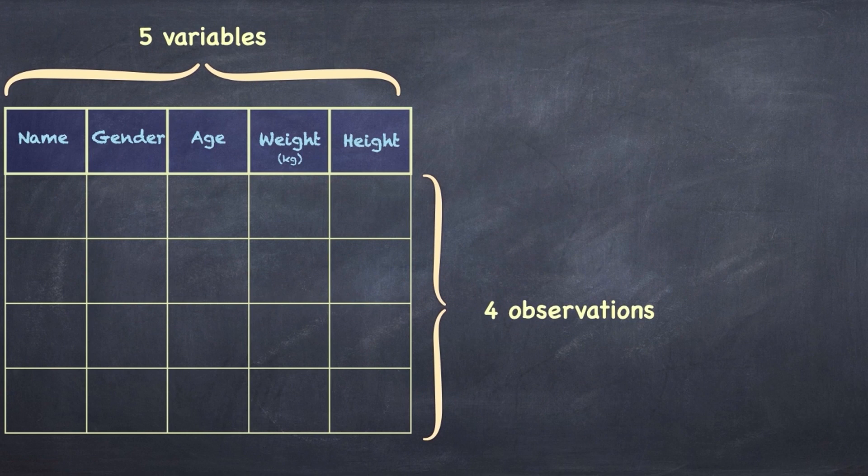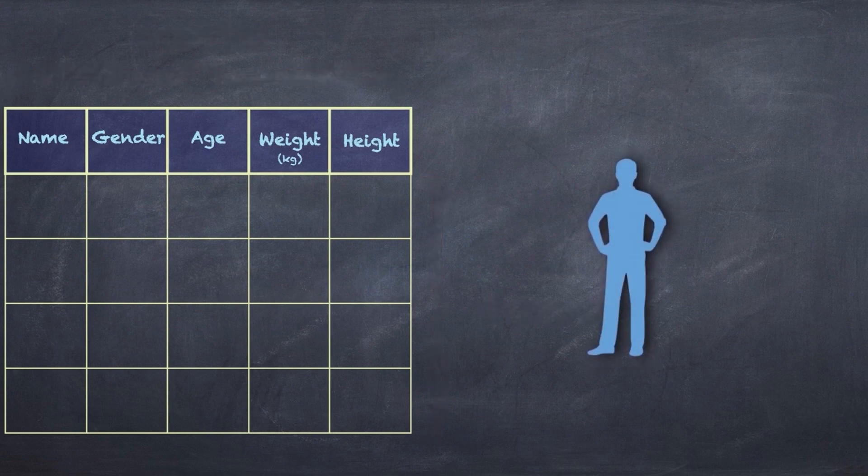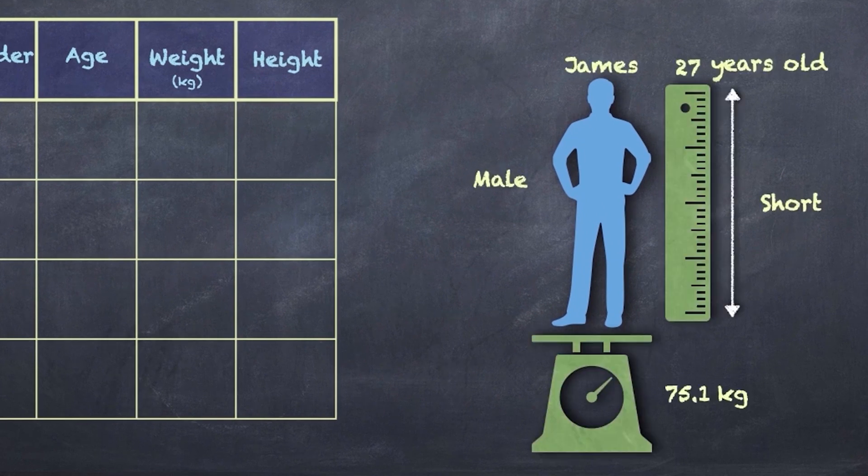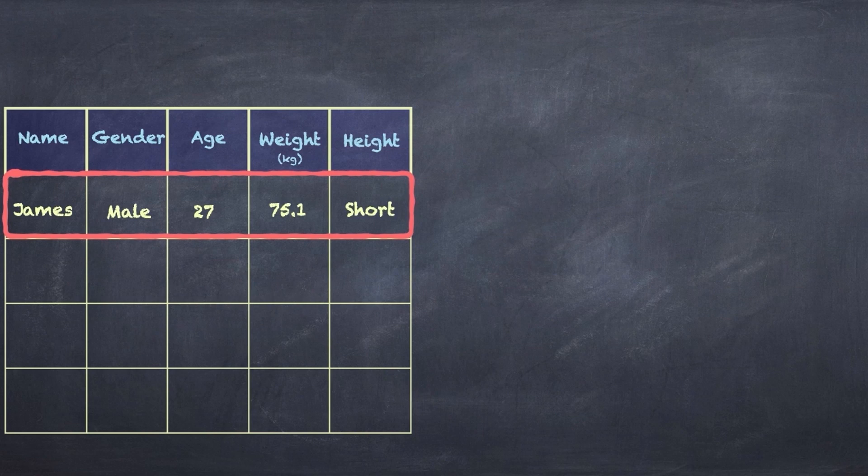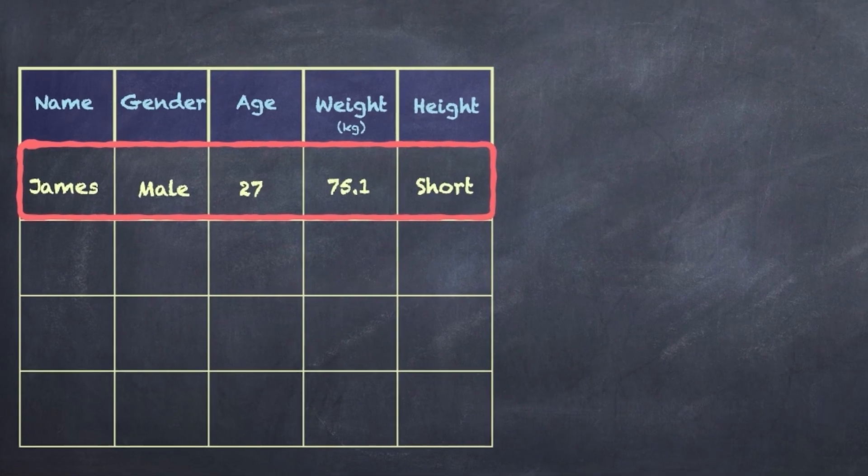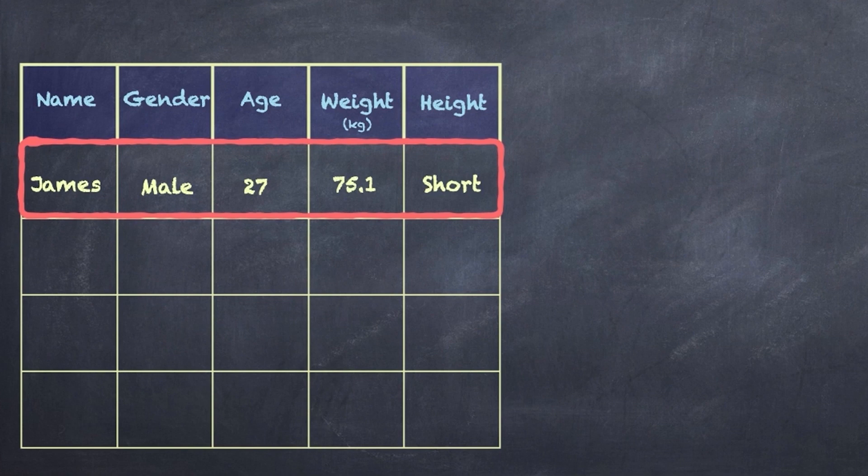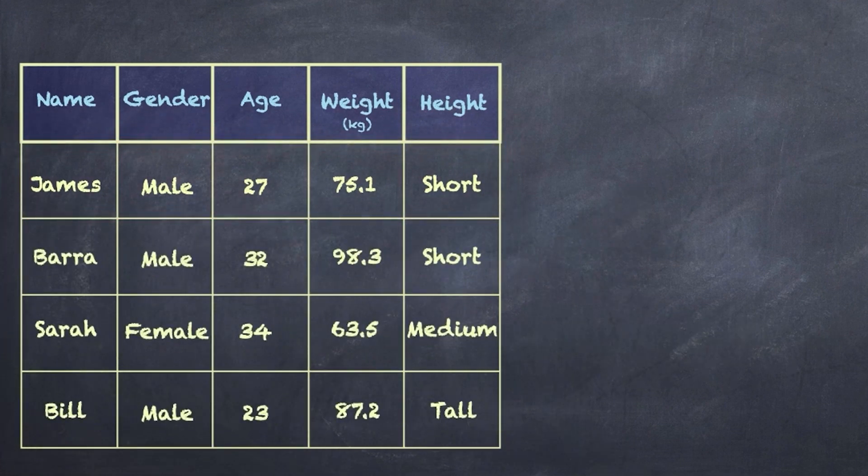Now, we've got four observations here. What do I mean by observations? Let's talk about someone called James. James has got certain characteristics that we're interested in. He's a 27-year-old male, he weighs 75.1 kilograms, he's been categorized as short. Together we call all of this information about James an observation, and we store that information as data under the appropriate column headings or variable headings. Of course we can add as many observations as we want, and this is what makes up our data set.